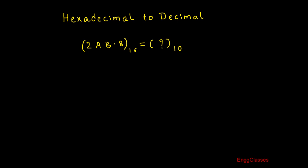Hello everyone, welcome to Engineering Classes YouTube channel. In this video lecture we shall consider the concept of hexadecimal to decimal conversion. The given numerical is 2AB.8 to the base 16 — what is its decimal equivalent? Without wasting much time, let's get into the concept straight away.